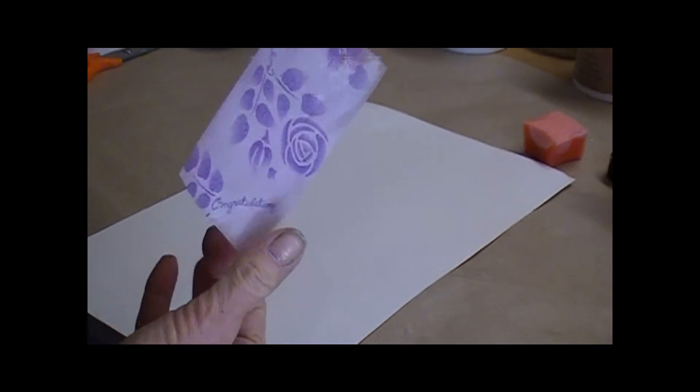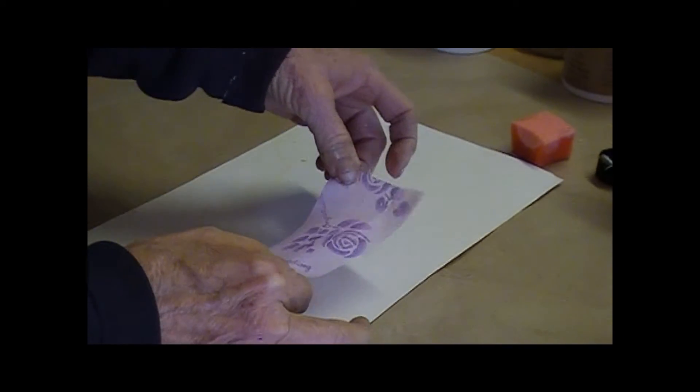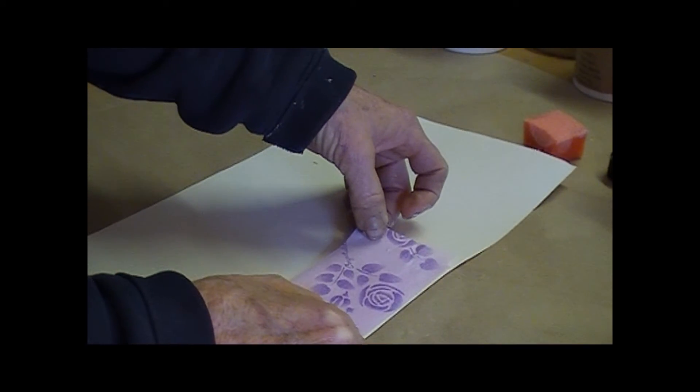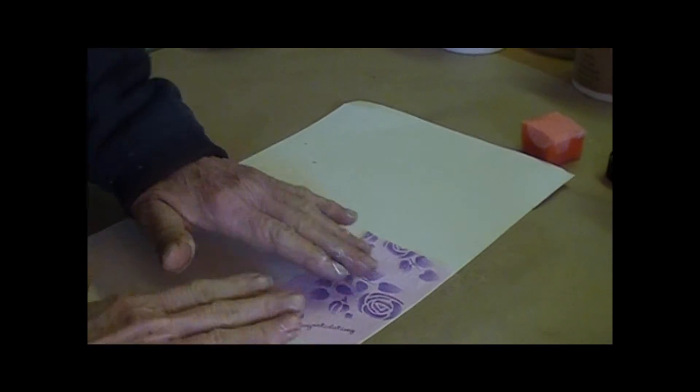In addition to the paper, you can do fabric to fabric for appliques. You can put it on styrofoam and do styrofoam to styrofoam and use it as a glue. You can do even wood to wood.